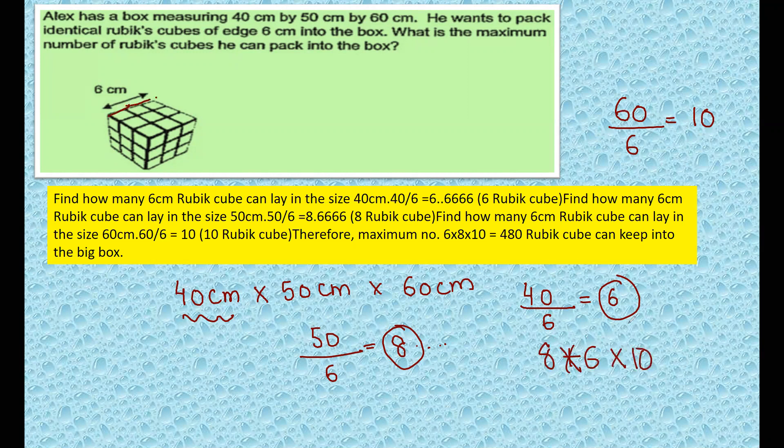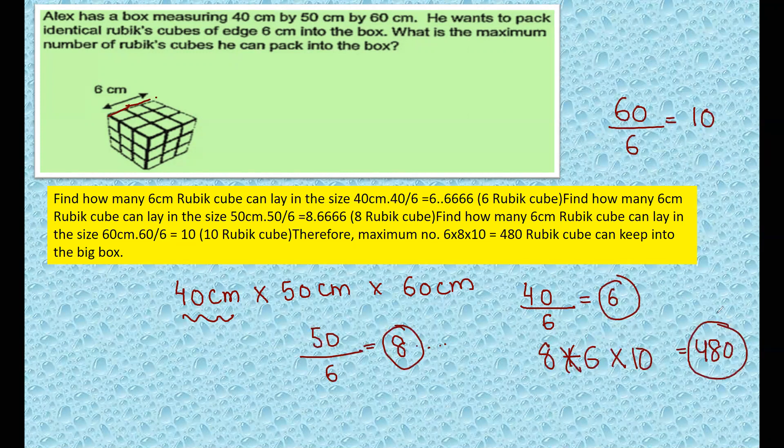Because every side they will be arranging, so it will have 480 cubes. So 480 Rubik's cubes can maximum fit through the box. This is the method to work it out. Note it down - this is a very important question. Every time I have seen this appearing in Maths Kangaroo, Maths IMO, and every good type of Olympiad. This is the method - if you work it out, you don't have to count and you don't have to assume. It is very easy.